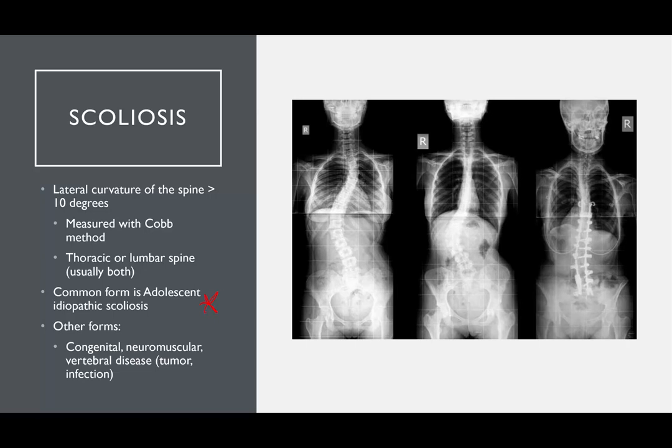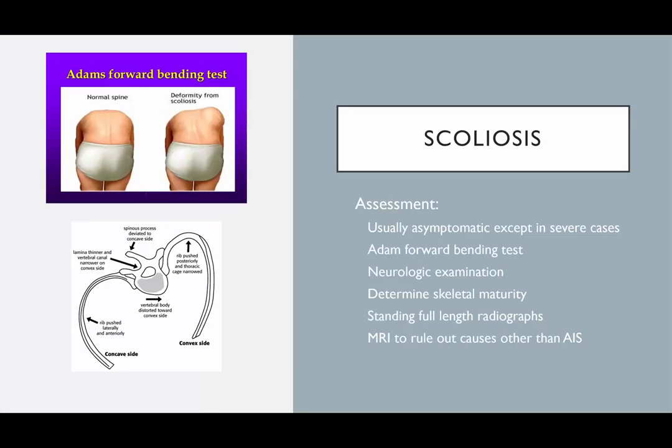Adolescent idiopathic scoliosis is the kind of disease you may see in a young teenager screened at school and then put in a brace. You can see examples of scoliosis and on the right-hand side a patient treated with a spinal fusion procedure. On assessment, these patients are usually asymptomatic and the condition is often picked up on screening, except in really severe cases.